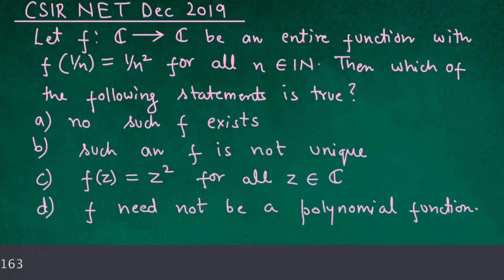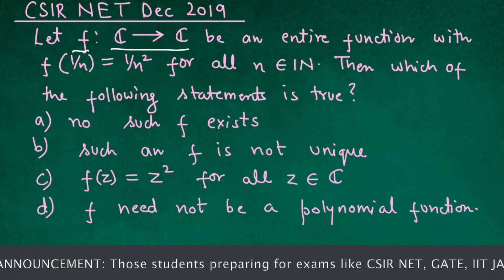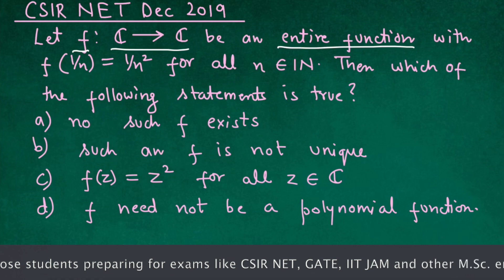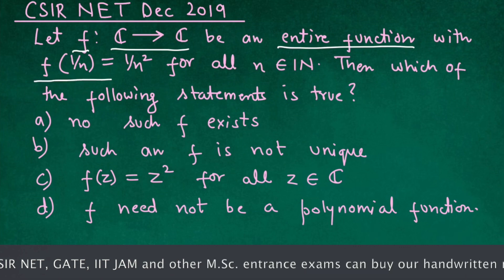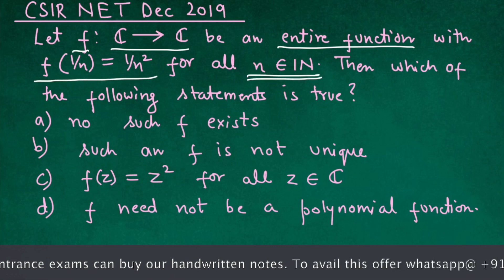This question has appeared in CSIR NET December 2019 exam. In this question we have function f from complex plane C to complex plane C, and this function f is an entire function. It is also given that f(1/n) equals 1/n² and n is a natural number.